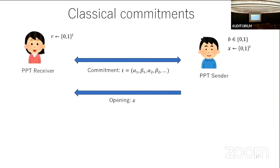Let me explain the quantization of a classical commitment. In the general description, we have a PPT receiver and a PPT sender. The receiver first chooses random seed r, the sender chooses a bit to commit and a random seed x, they exchange messages forming a commitment transcript, and in the opening phase the sender sends the random seed. This is the general description of classical commitment.